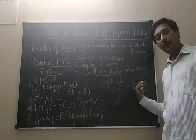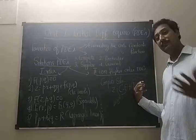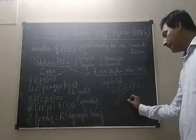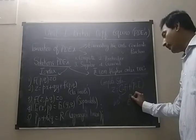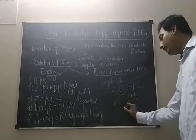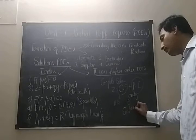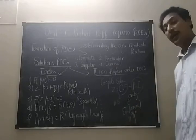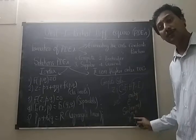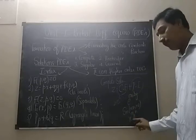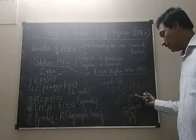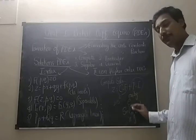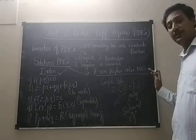And the particular integral depends upon the right hand side function. So there are some standard functions in the case of the right hand side. First one is exponential in the power AX plus BY. Second one is trigonometric sin or cos MX plus NY. Third one is the polynomial, X to power M into Y to power N. And these are three standard forms or types of function. And the fourth one is product of the exponential and the other two functions. So these are the topics what we have in the second or higher order partial differential equations.